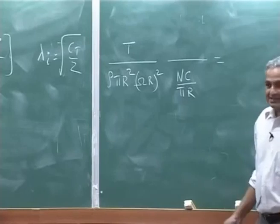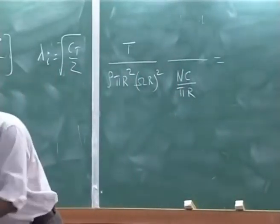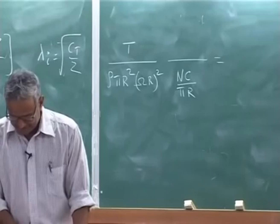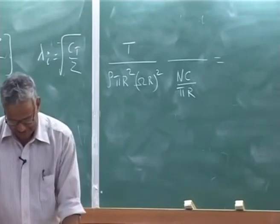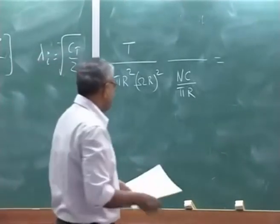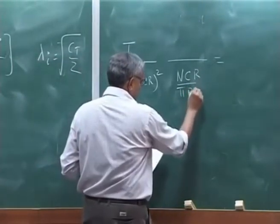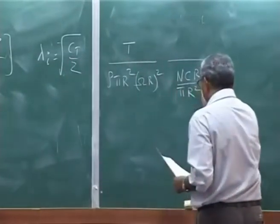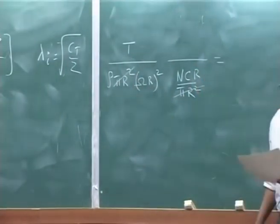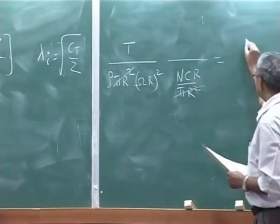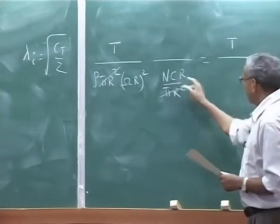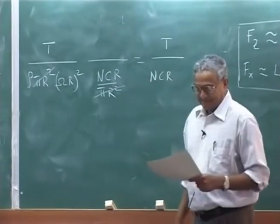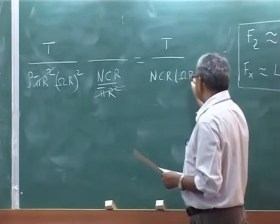Now, this factor you can reduce in a slightly different form, which will give you approximately a different form of expression. If you take it as NCr pi r square, what happens? This pi r square will go off, this will become thrust divided by N number of blades Cr, of course, omega r whole square and rho.